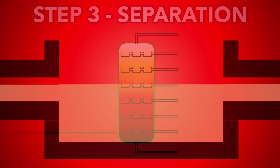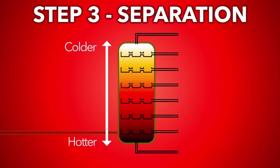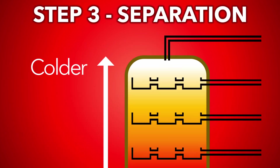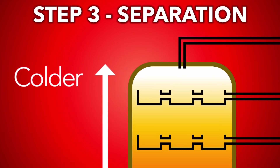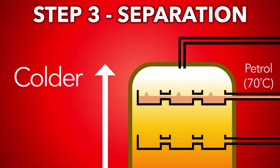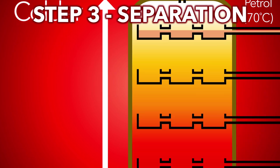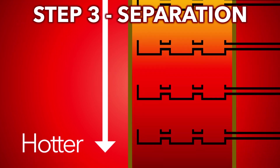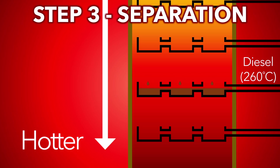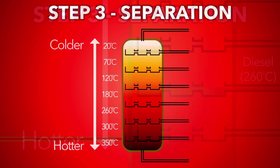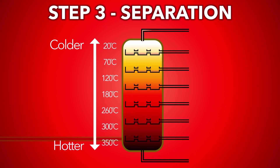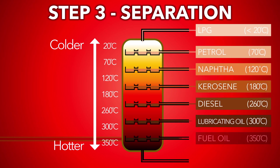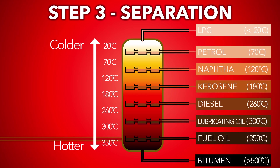So how does the column separate crude oil? Because the column is cooler at the top, fractions with lower boiling points, like petrol, condense at the top of the column. And because the column is hotter at the bottom, fractions with higher boiling points, like diesel, condense lower down the column. Each fraction condenses where the temperature of the column matches its boiling point.